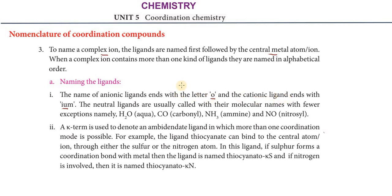To summarize: anionic ligands end with the letter 'O', cationic ligands end with 'IUM'. Neutral ligands use their molecular names with exceptions — H2O is aqua, CO is carbonyl, and NH3 is ammine.